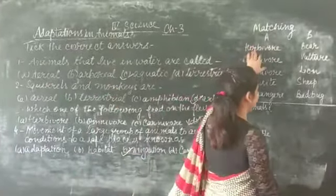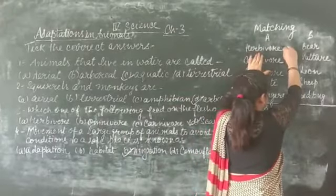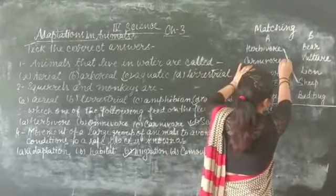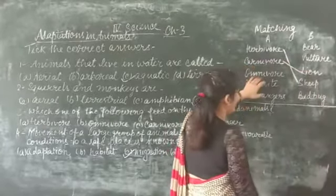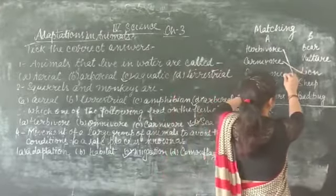Now the matching exercise. Herbivore is plant eating animals, example is sheep. Carnivore is flesh eating animal, example is lion. Omnivore eats both flesh and plants, example is deer.